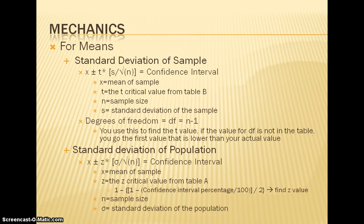When you find the z-critical value, it's 1 minus (1 minus the confidence interval percentage over 100) divided by 2. The confidence interval percentage divided by 100 is just the decimal form of the percentage. So if it was 95%, it would just be 0.95. And you always subtract everything in the parentheses from 1 because when you find the z values, it's always left of the percentage. n is the sample size and sigma, in this case, is the standard deviation of the population.